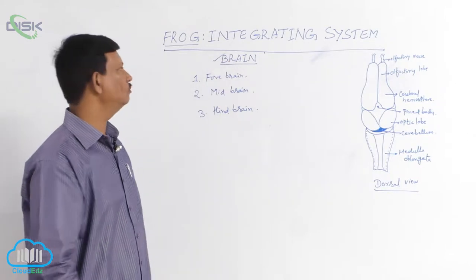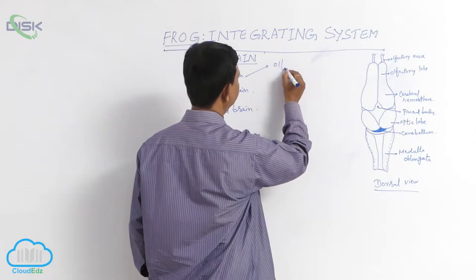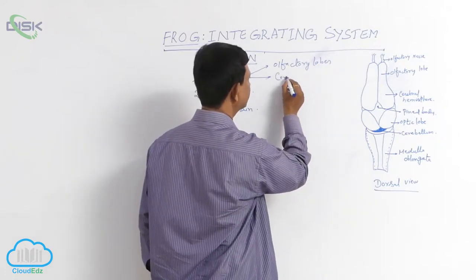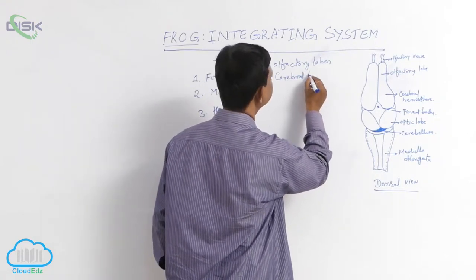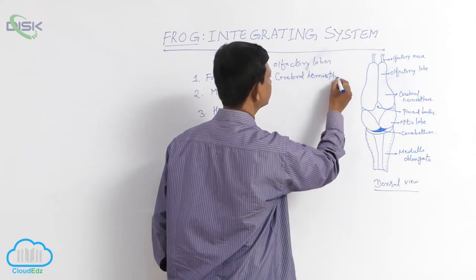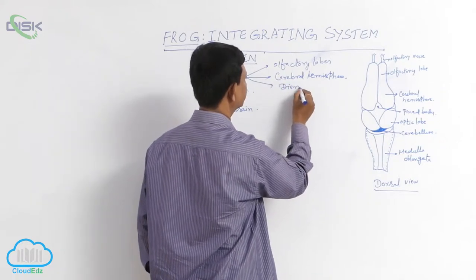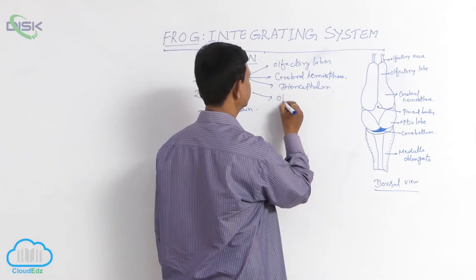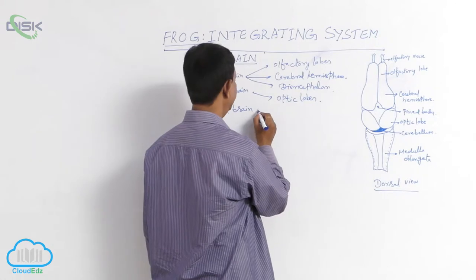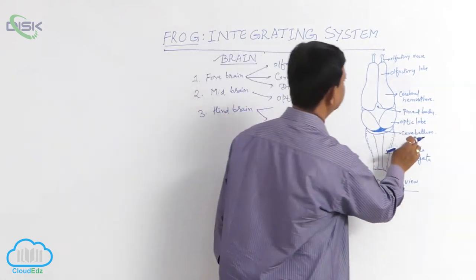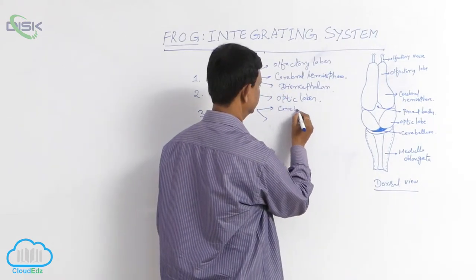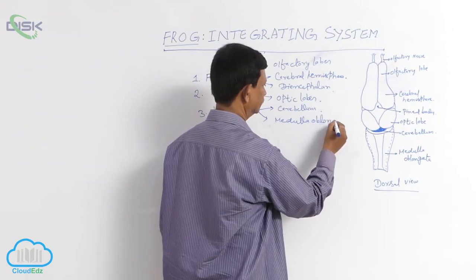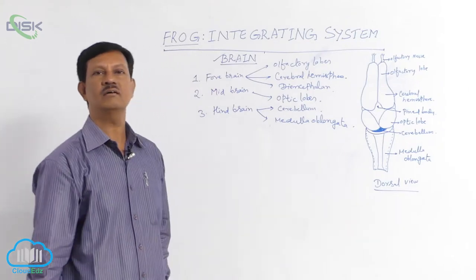Frog forebrain includes three parts: olfactory lobes, cerebral hemispheres, and diencephalon. Midbrain includes optic lobes. Hindbrain includes two parts: cerebellum and medulla oblongata. These are the parts found in the frog brain.